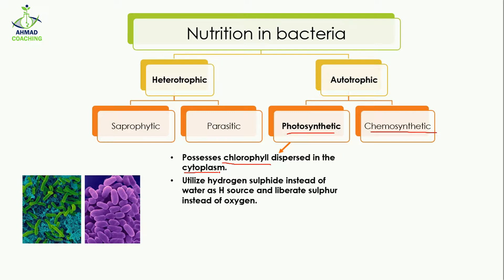Photosynthetic bacteria possess chlorophyll which is dispersed in their cytoplasm, but their chlorophyll is different from that present in plants. In the presence of sunlight they produce their own food, but instead of water as a hydrogen source, they utilize hydrogen sulfide (H₂S). They use the hydrogen for food production and release the sulfide in the form of sulfur.